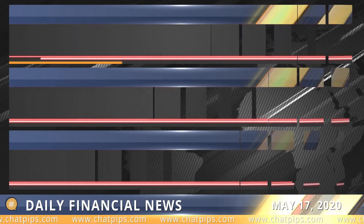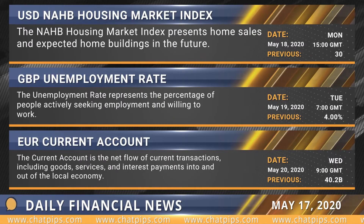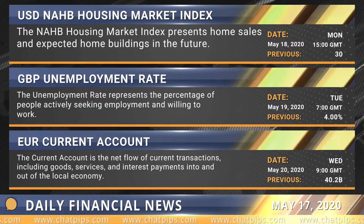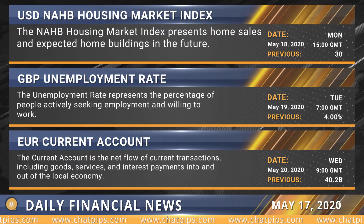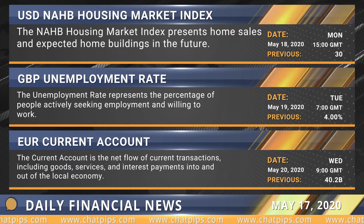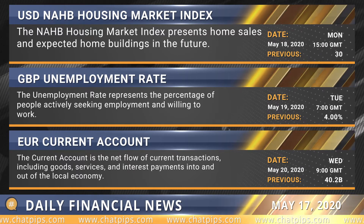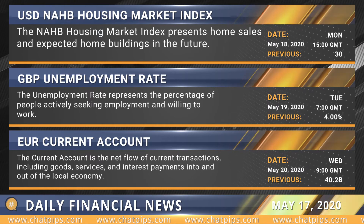And now let's review today's major economic events. The US NAHB Housing Market Index will be released on Monday at 1500 GMT, the UK unemployment rate Tuesday at 700 GMT, and the Eurozone's current account Wednesday at 900 GMT.